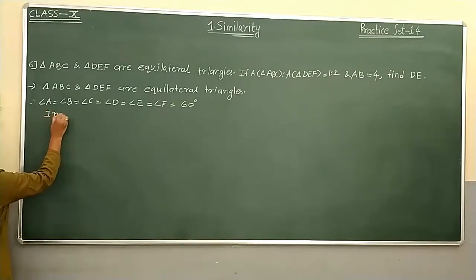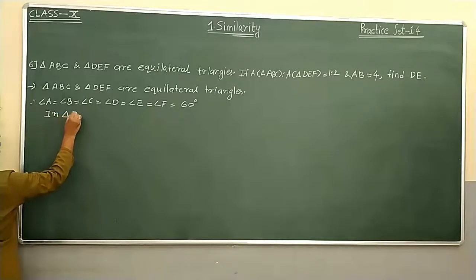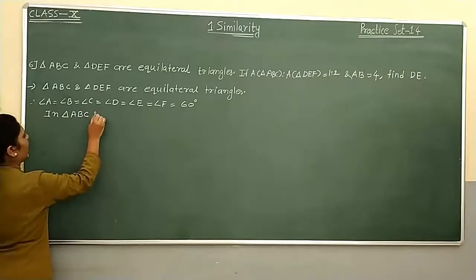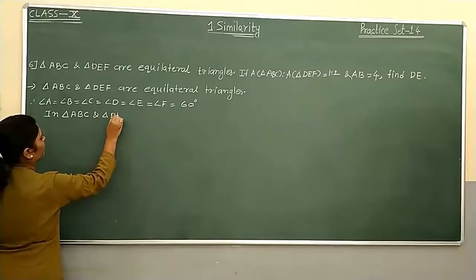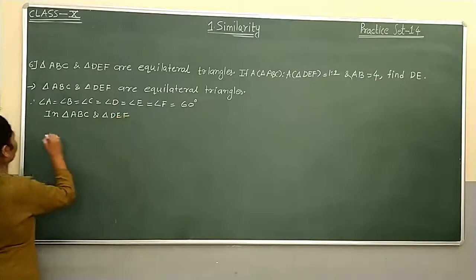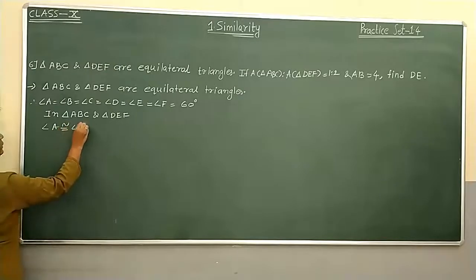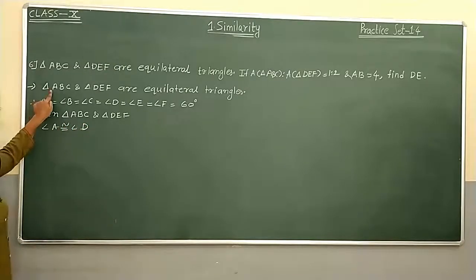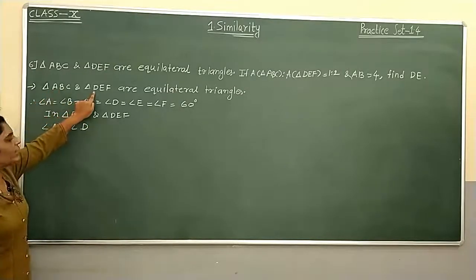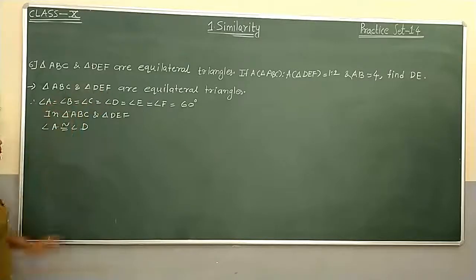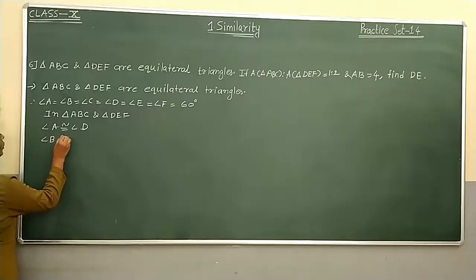In triangle ABC and triangle DEF: angle A is congruent to angle D, since they are corresponding angles. B corresponds to E, and C corresponds to F — all equal to 60 degrees.